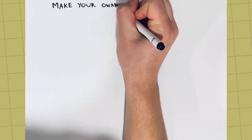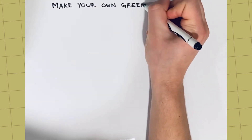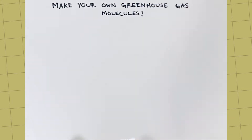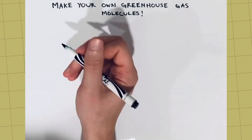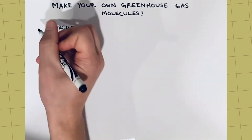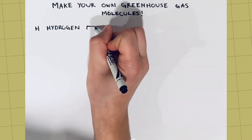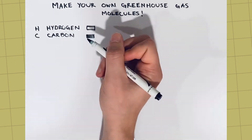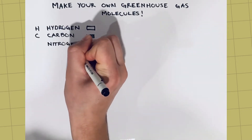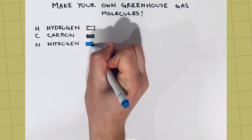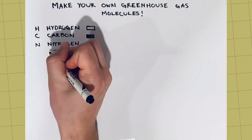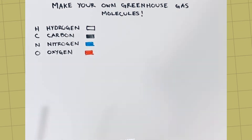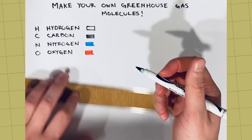Want to make greenhouse gas molecules at home? You can use any arts and crafts materials, toys, or even food. Start by listing each atom, its symbol, and assigning a color to it. The atoms we will be using are hydrogen, carbon, nitrogen, and oxygen. Next, list each greenhouse gas.